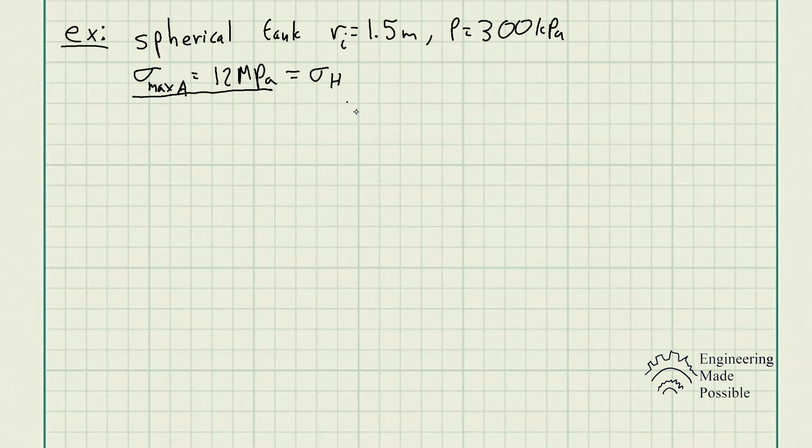Now we're asked to solve for the thickness such that the axial stress won't exceed 12 megapascals. Here's the equation we're going to be using: the hoop stress for a spherical tank is equal to the internal pressure times the diameter divided by 4 times t.